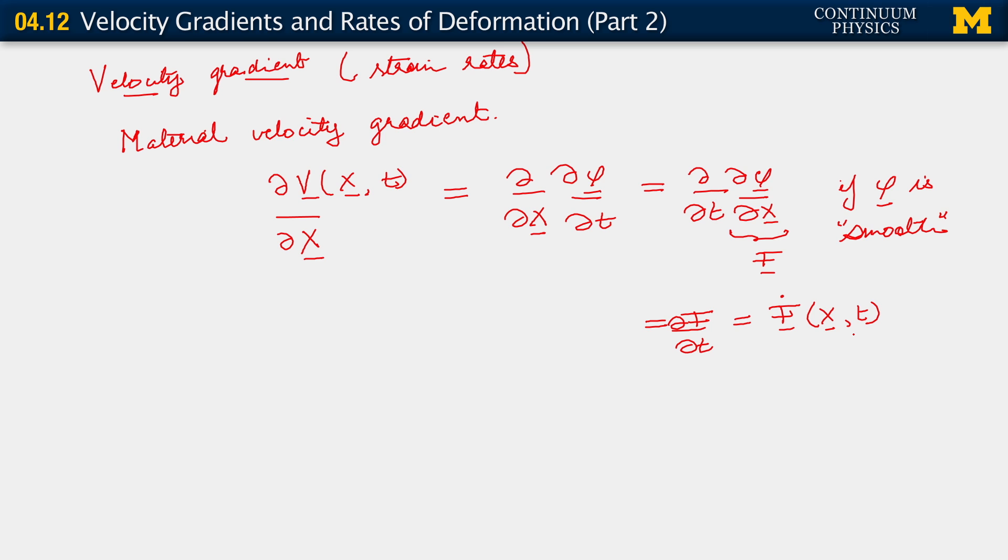However, the moment I wrote this out, you may have observed that there is another way to talk of velocity gradients. In particular, observe that when I wrote this out, I wrote the material velocity, parametrized by reference position, and took its reference gradient. We know we can do things differently. So we also have the spatial velocity gradient.